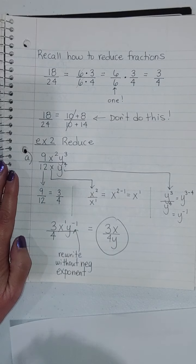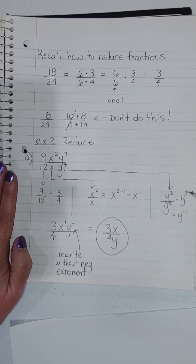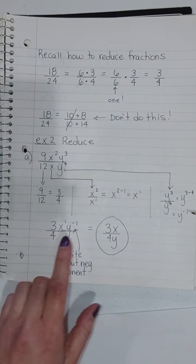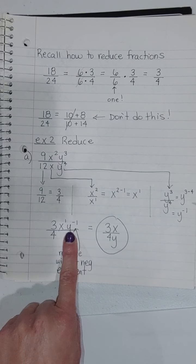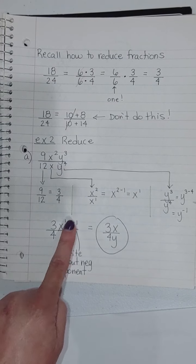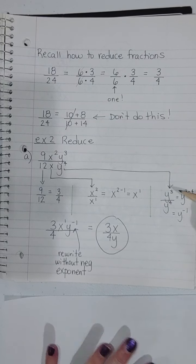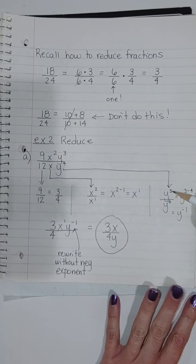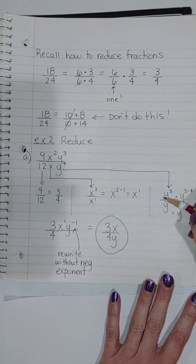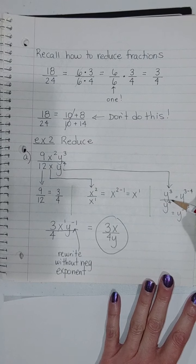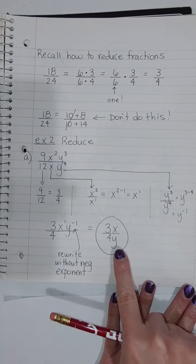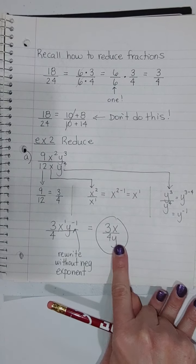For the y terms: y to the third over y to the fourth. Using subtraction, you get 3 minus 4, which is negative 1 — a negative exponent. We need to get rid of that negative exponent, so move it down to the denominator to make it a positive 1. Or you can think of it as: three y's cancel three of the four, leaving one y in the bottom. Either way, you end up with y to the first in the denominator.